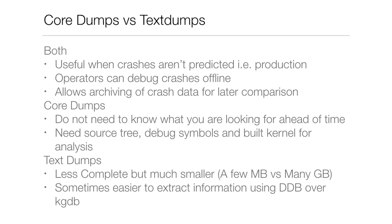Comparing core dumps versus text dumps: both are useful when crashes aren't predicted in production, both allow operators to debug crashes offline and put machines back online, and both allow archiving of crash data for later comparison. For core dumps, you don't need to know what you're looking for ahead of time. But core dumps require the source tree, debug symbols, and a built kernel for analysis. Text dumps are less complete but much smaller — a few megabytes versus many gigabytes — and sometimes easier to use with DDB over KGDB.